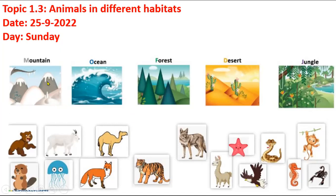Here are five different environments. First, we have mountains — this habitat is cold. Next is ocean — you look at which animal can survive in the ocean. Then we have forest, desert, and jungle. You have to find out which animal can survive and grow in each of these five different habitats.